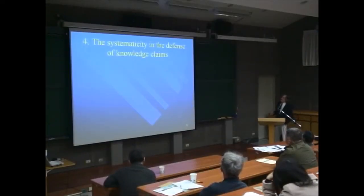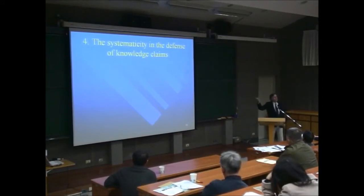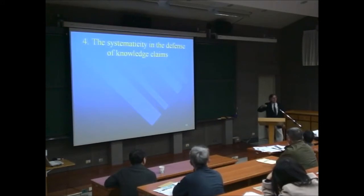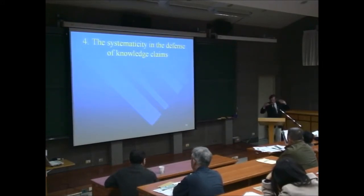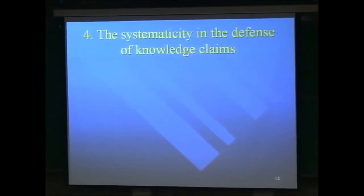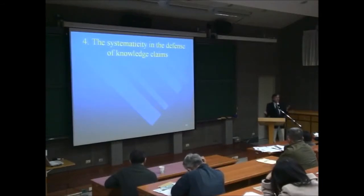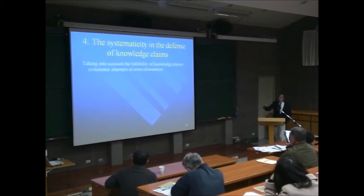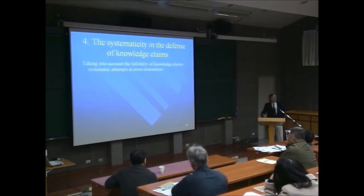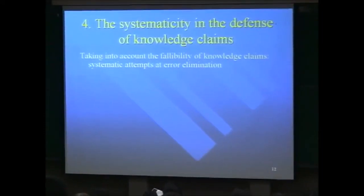The systematicity in the defense of knowledge claims is perhaps the most important dimension. Sciences are extremely systematic in defending knowledge claims — you must not just say something, but give an argument and defend it. Sciences take into account the fallibility of knowledge claims — knowledge claims can be false — and systematically attempt error elimination more than anything else.